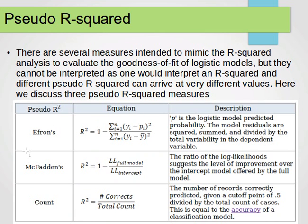Now, pseudo R-squared, there are several measures intended to mimic the R-squared analysis to evaluate the goodness of fit of logistic models. But they cannot be interpreted as one would interpret the R-squared and different pseudo R-squared can arrive at very different values. There are some suggested methods, but they can arrive at different values. We can get different results.